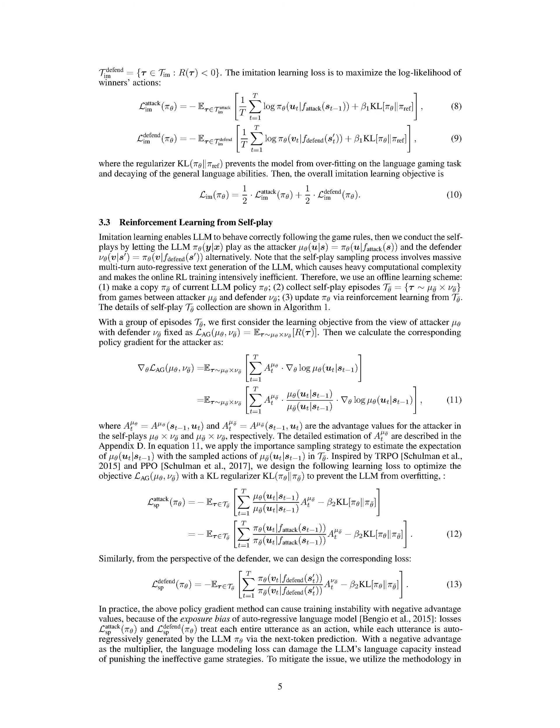Section Summary. In this section, we ensure that the language model follows game rules by using imitation learning before self-play. The self-play process involves the LLM playing as both attacker and defender alternatively, with offline learning to update the policy through reinforcement learning. To address training instability, we select episodes with positive rewards for attackers and negative rewards for defenders. Optimizing the self-play of adversarial language games (SPAG) objective.